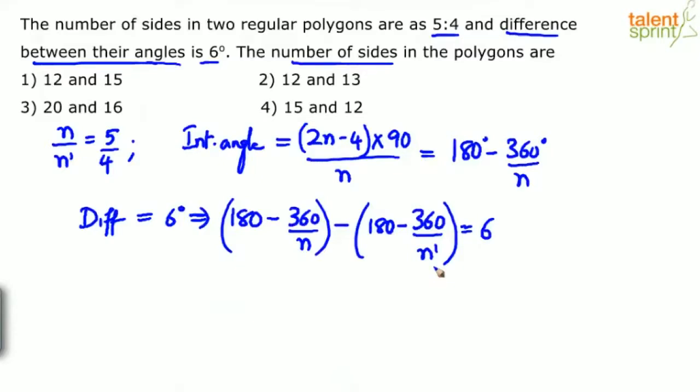Simplifying: 180 and -180 cancel, and this minus of minus 360/n' becomes 360/n'. We get 360/n' - 360/n = 6. Simplify by taking 360 as common.